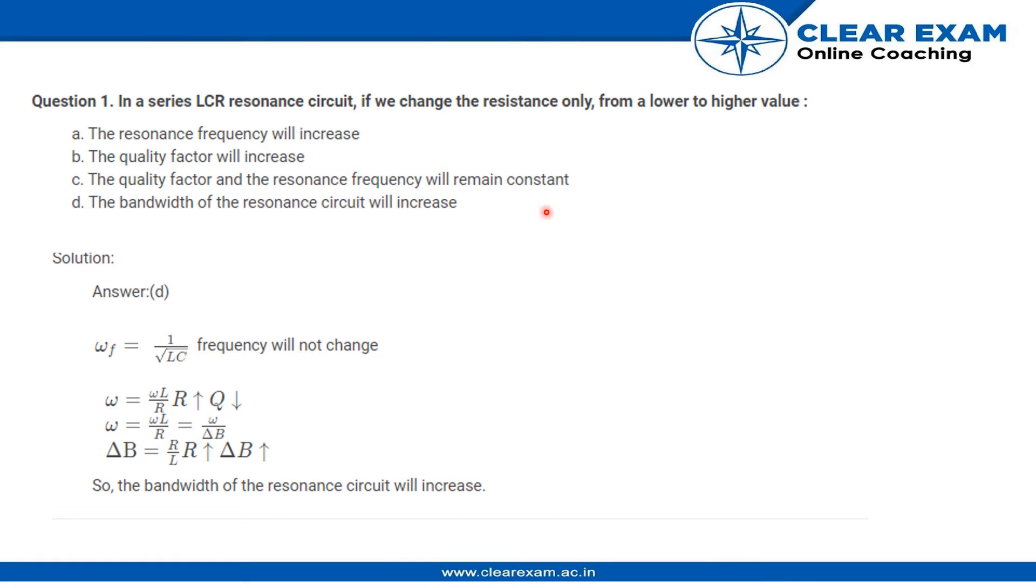Let's see both these options. We have ω = ωL/R. Now, as we increase the resistance, the charge in the circuit will decrease because there will be more resistance offered to the charge flowing. Therefore, charge flow will decrease.